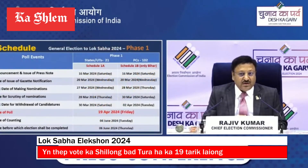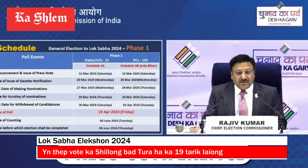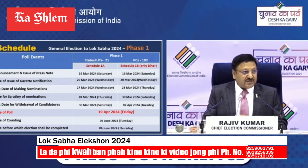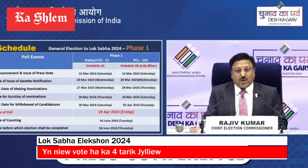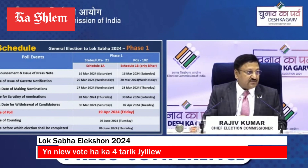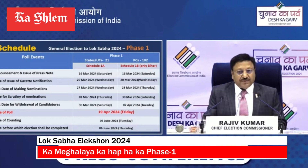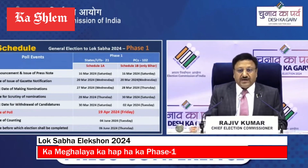Schedule of the Lok Sabha poll, Phase 1. We'll do it in 7 phases, as was done last time. Phase 1 will start from 20th March notification, 5 days from now. The last date of withdrawal would be 30th March and the date of poll would be 19th April.